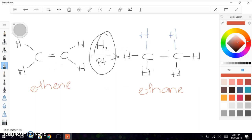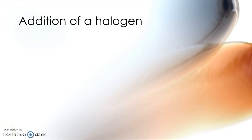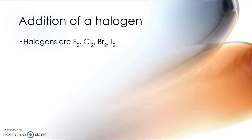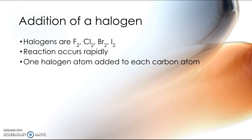In a very similar way to how we've added hydrogen into our molecule, we could equally easily add a halogen. Halogen is — just to remind you — fluorine, chlorine, bromine, iodine. Just like hydrogen, there are two of each of them, so that makes it really easy. It's a fast reaction and we add one of the halogens to each carbon, which produces our product — a dihaloalkane.